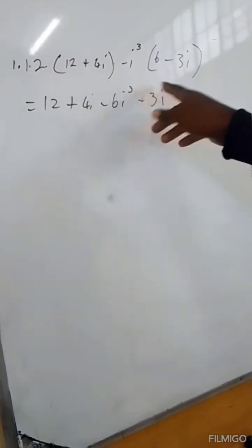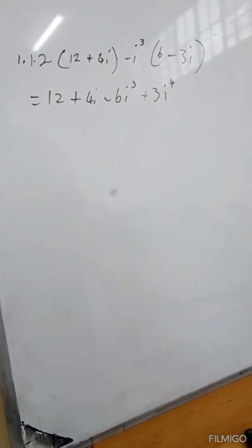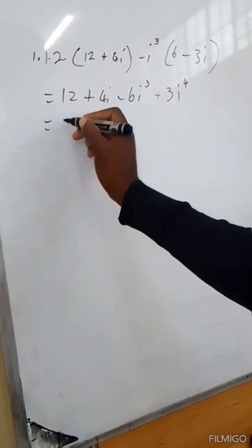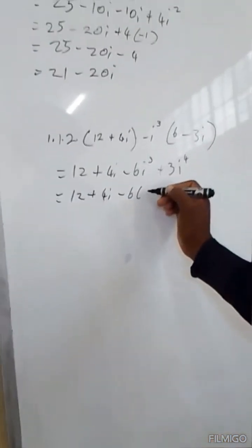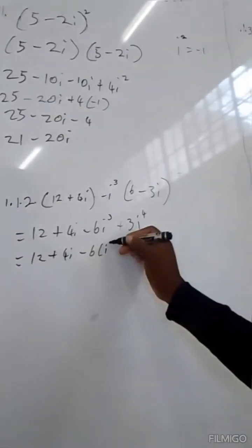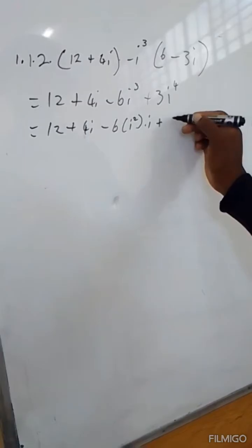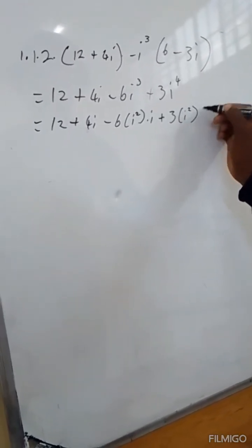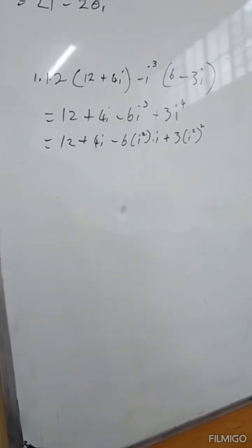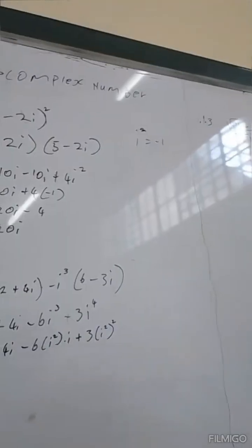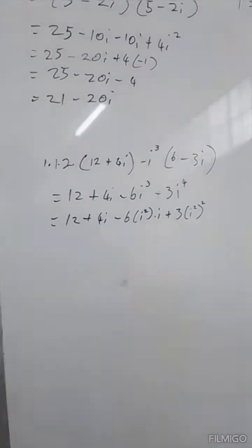So here we are going to break down the exponent of i, where i must be left with an index of 1. The second step will be equals to 12 plus 4i minus 6 times i squared times i, plus 3 times i squared to the exponent 2. Remember, i squared equals negative 1, so we are going to substitute i squared with negative 1 wherever we see it.